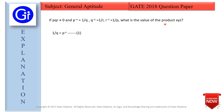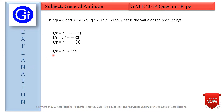We start with the first equation: 1 upon Q equals P raised to the power minus X — we have just swapped the LHS and RHS. Similarly, the second equation gives 1 upon R equals Q raised to the power minus Y, and the third equation gives 1 upon P equals R raised to the power minus Z. Now, 1 upon Q can also be written as 1 upon P raised to the power X.